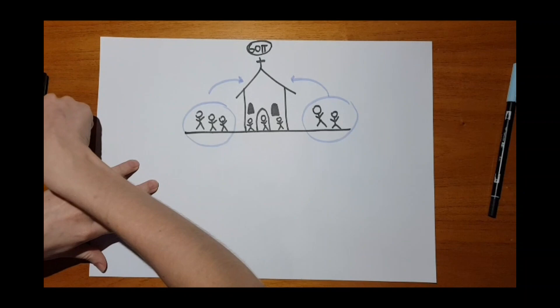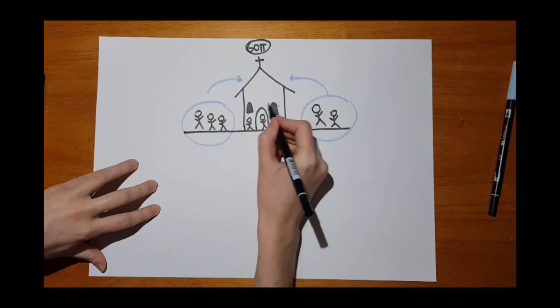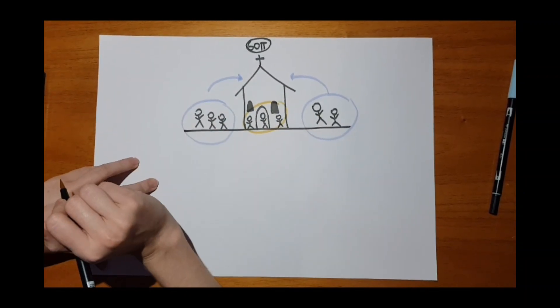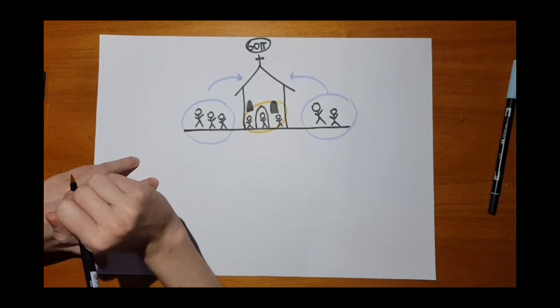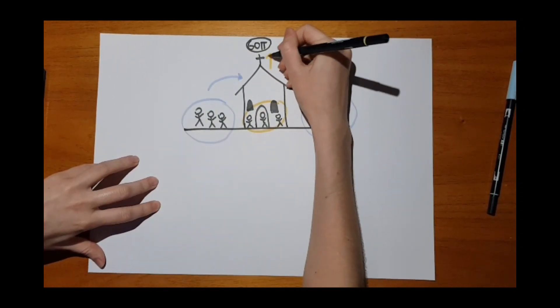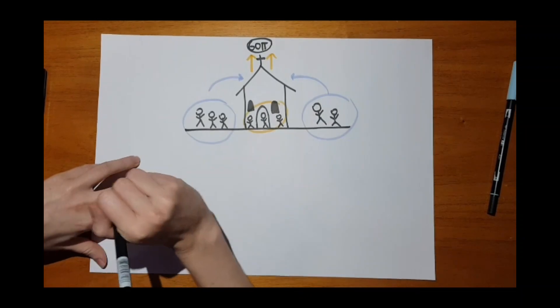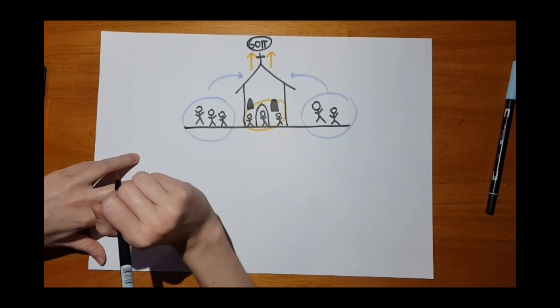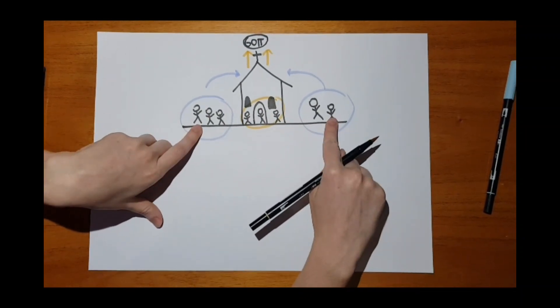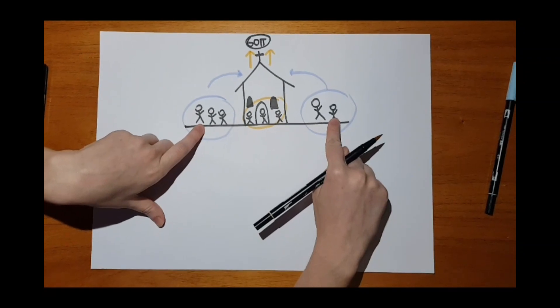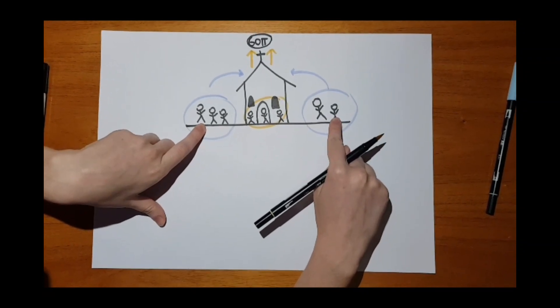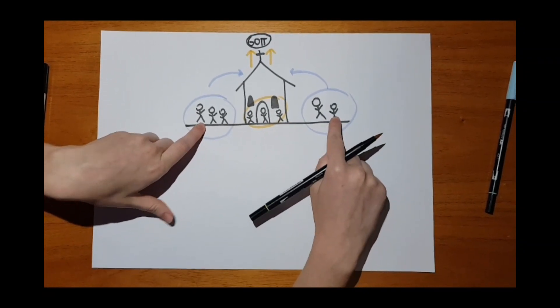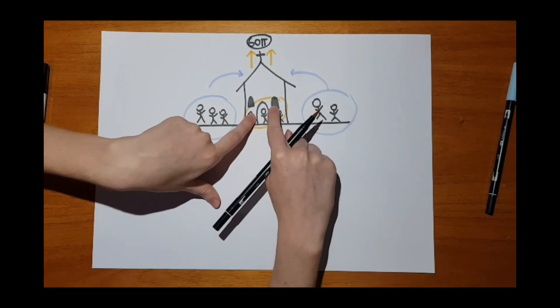Kirche sind aber auch die Menschen, die hier drin sind. Manchmal glauben wir, dass wir in die Kirche gehen müssen, um in den Himmel zu kommen, um zu Gott zu gehen. Und wir merken aber auch, dass es draußen viele Menschen sind, die in der Dunkelheit leben. Diese Menschen dürfen wir einladen, in die Kirche zu kommen. Wir wollen so viele Leute wie möglich in die Kirche reinbringen.